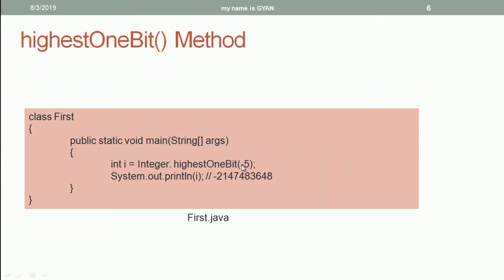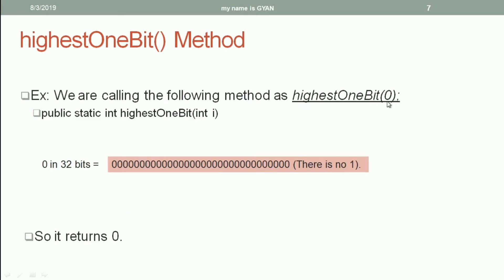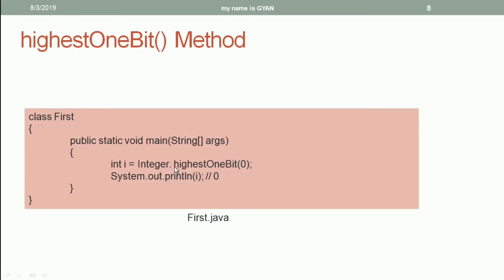Here we are passing minus 5 as the argument of the highestOneBit() method of the class integer, and it returns that signed value as output. When we call the highestOneBit() method of the class integer using 0 as its argument, the 32-bit binary pattern of 0 contains no 1s. So there is no most significant 1, and therefore the method returns 0.